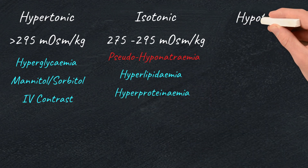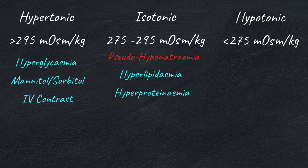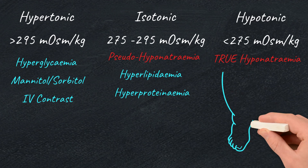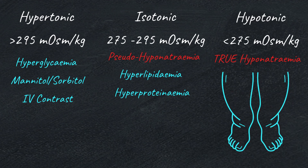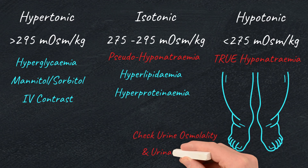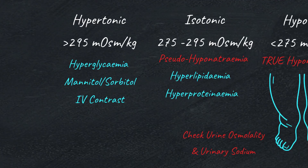If the osmolality is hypotonic — less than 275 — then this is true hyponatremia and it's where we need to do a proper clinical volume status check. You look at the vital signs, look for peripheral edema and JVP, look at the skin turgor and mucous membranes for dryness, and check their U&Es for biochemical dehydration. At this point, when you suspect true hyponatremia, send off a urine sample for urine sodium and urine osmolality.